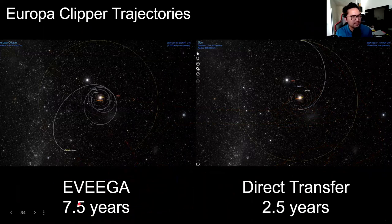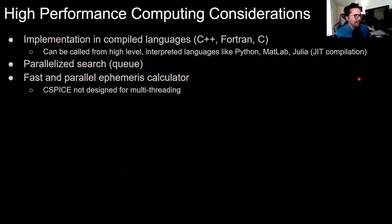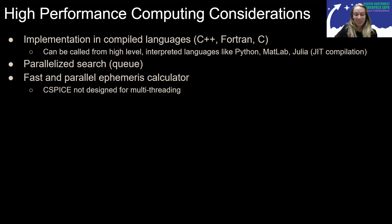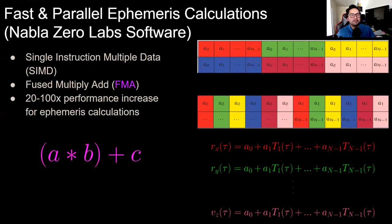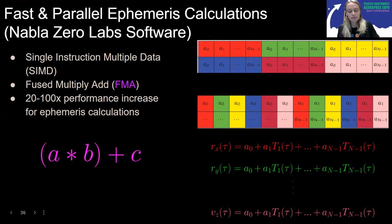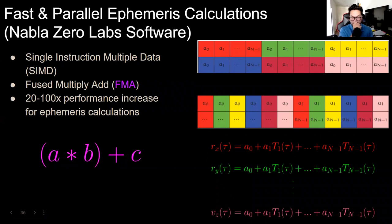As an example, Europa Clipper has two proposed trajectories: a direct Earth-to-Jupiter transfer (~2.5 years) and an EVEGA (Earth-Venus-Earth-Earth gravity assist) trajectory taking ~7.5 years. The five-year difference is offset by the ability to carry significantly more mass due to less required delta-v. This is a highly parallelized search — going back to the tree structure, that's the key to making this computationally feasible.